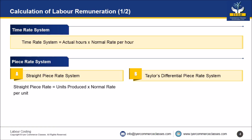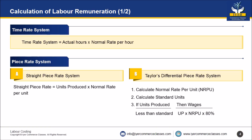Next is Taylor's differential piece rate system. Step one: calculate normal rate per unit. Step two: calculate standard units. Step three: compare units produced with standard units. If units produced is less than standard, wages = units produced × normal rate per unit × 80%. If units produced is equal to or more than standard, wages = units produced × normal rate per unit × 120%.